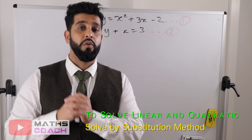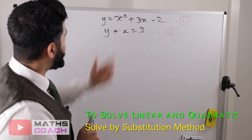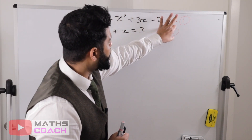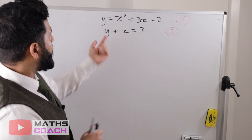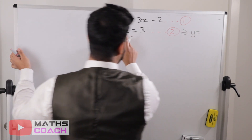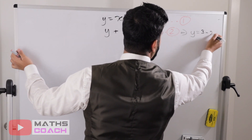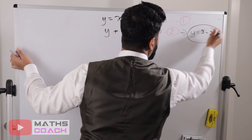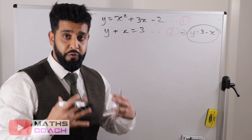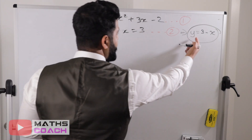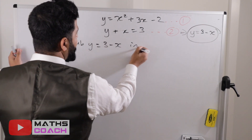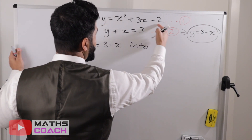We now need to use a method of substitution — substituting one equation into the other. Looking at both equations, the linear one is more simple. We can rearrange it so that y equals 3 minus x, and we can call this our third equation — it's equation number two in a different form. We will substitute y equals 3 minus x into our quadratic equation, equation number one.